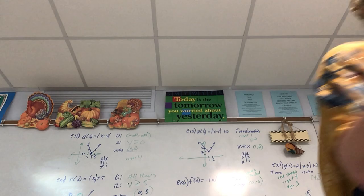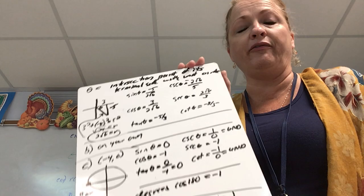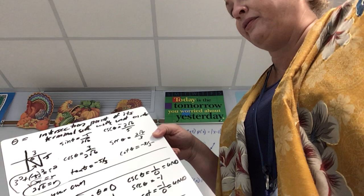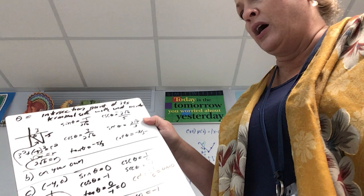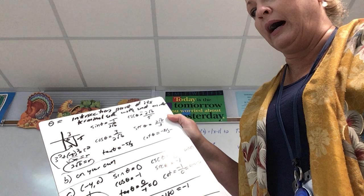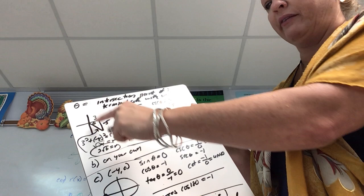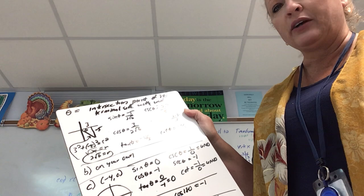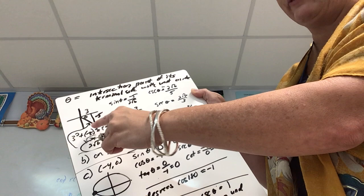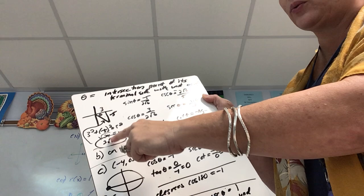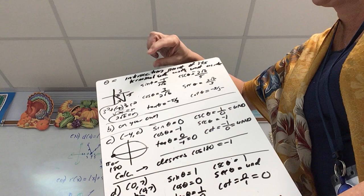Adding more to our connection of trig functions with the unit circle: theta is defined as the intersection point of its terminal side with the circle. The first example asks us to set up the six trig ratios given that the point intersects the unit circle at (3, -5). That point is right 3, down 5, forming a triangle in quadrant four. We need to find the hypotenuse using the Pythagorean theorem: √(9+15) = √24 = 2√6.